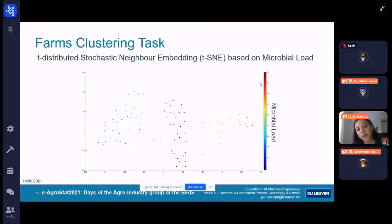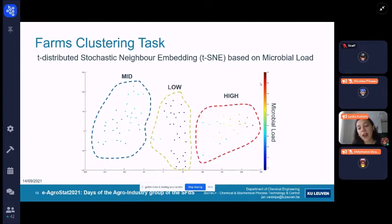And it represents our data in a two-dimensional space. Here, you can see each dot representing one farm. And as you can see, three clusters are formed and are based on the value of the microbial load. So we have the high level of microbial load, the low level, and the mid level.